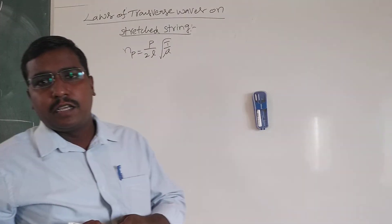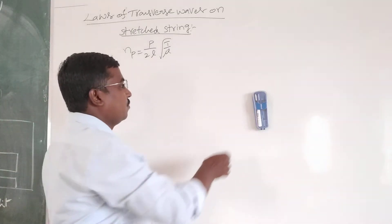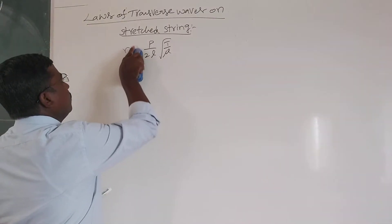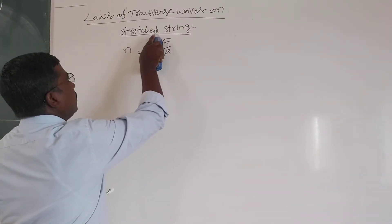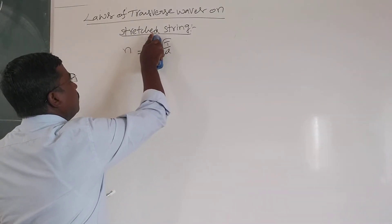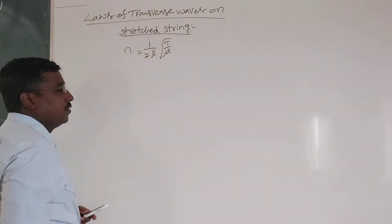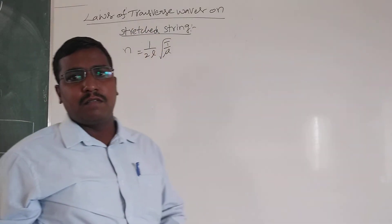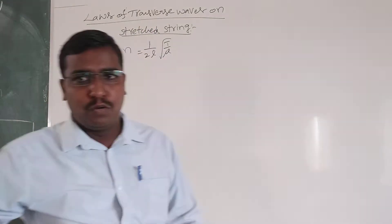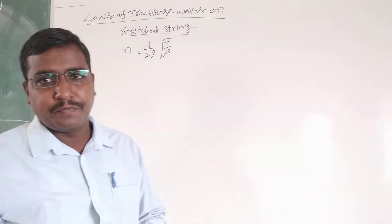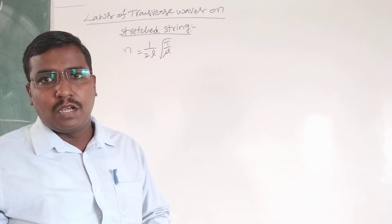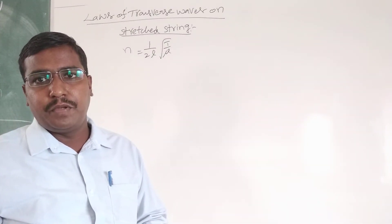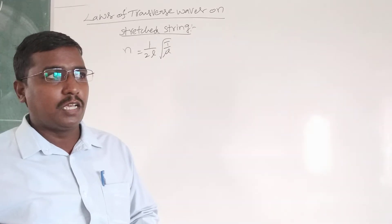In case the string vibrates with one loop, then N1 equals 1 by 2L root of T by M. If it vibrates with two loops, then N2 equals 2 by 2L root of T by M.